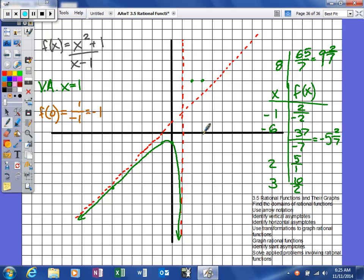So we're plotting those points on the right side of the vertical asymptote. So our graph will look a little something like that.